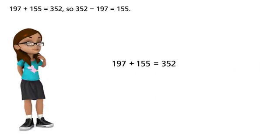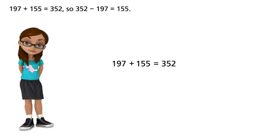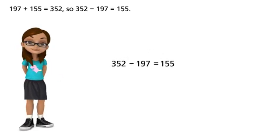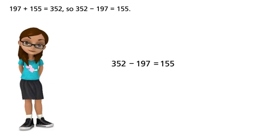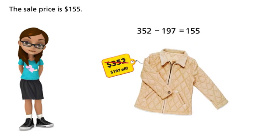197 plus 155 equals 352. So 352 minus 197 equals 155. The sale price is $155.